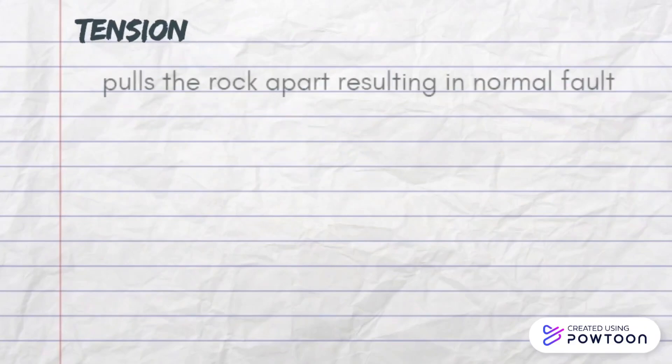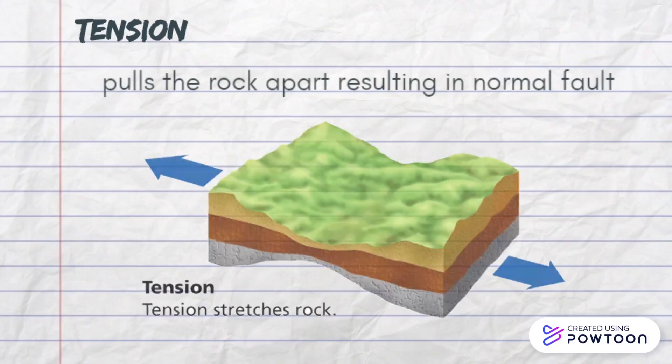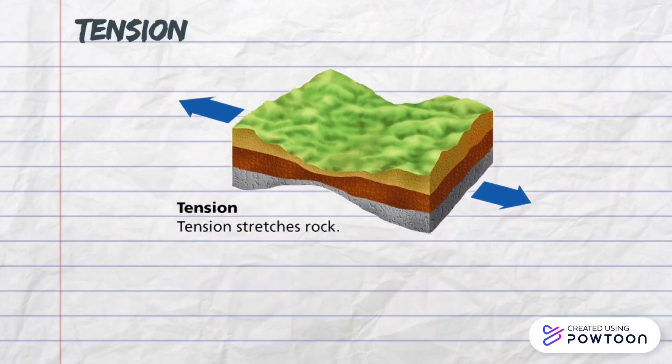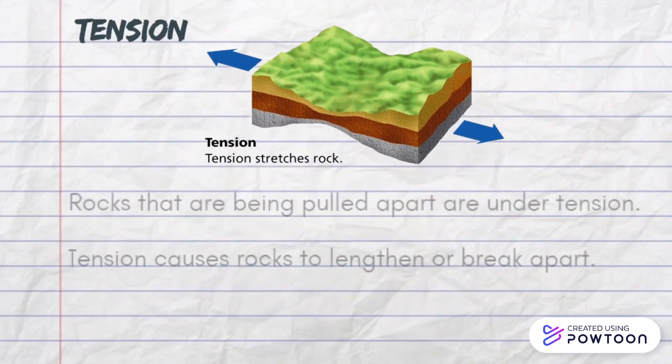Tension pulls the rock apart, resulting in a normal fault. Rocks that are being pulled apart are under tension. Tension causes rocks to lengthen or break apart.